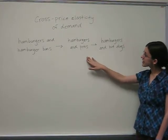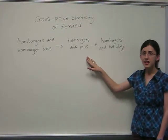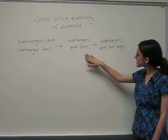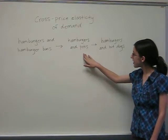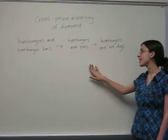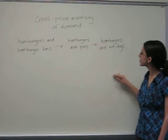If the price of hamburgers increases, it is unlikely that the demand for pens will change at all. Cross-price elasticity of demand will be zero, and these goods are effectively unrelated.